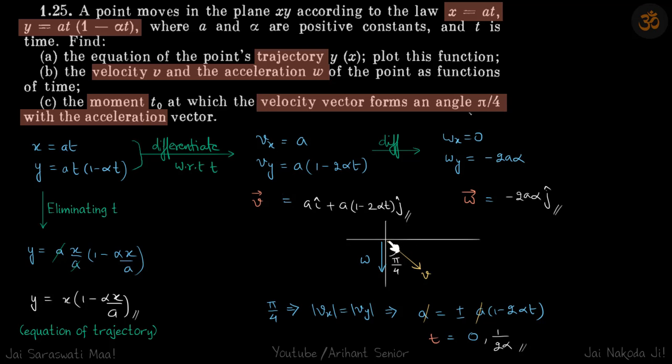and we are going to reject one of them because at t is equal to 0 you can see that it will be in the first quadrant. So we need it to be in the fourth quadrant. So our acceptable solution is 1 by 2α.